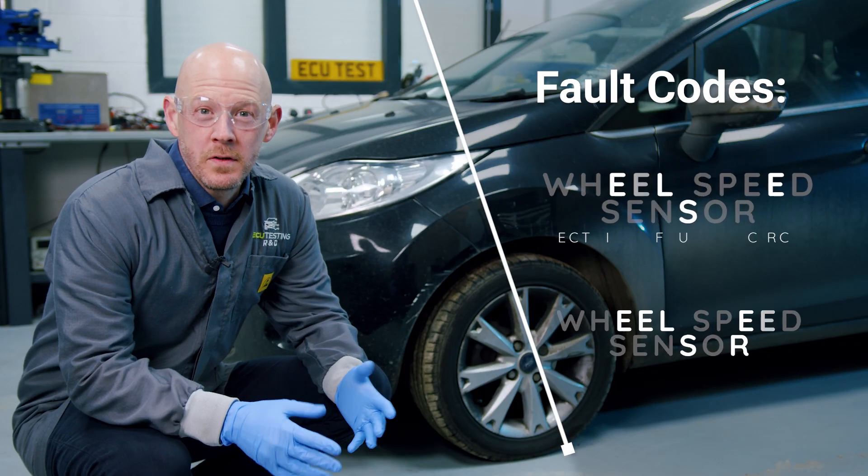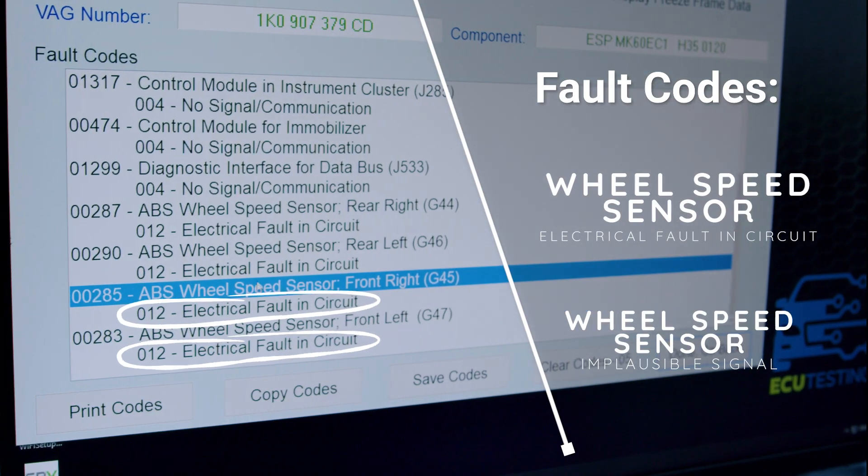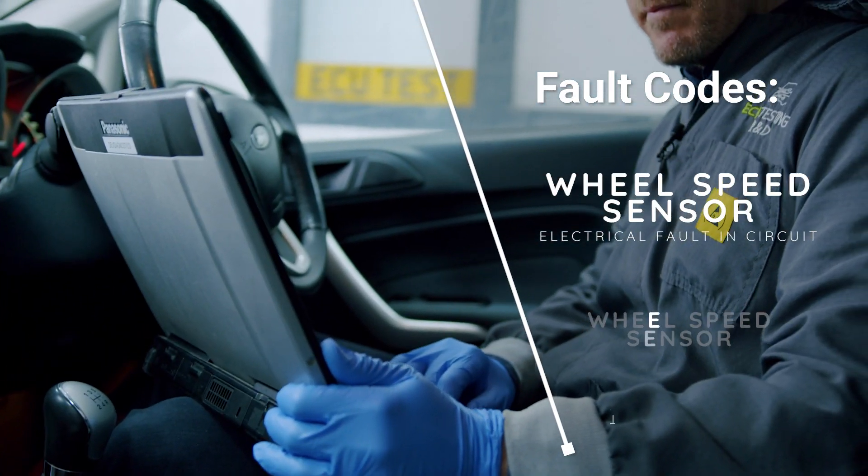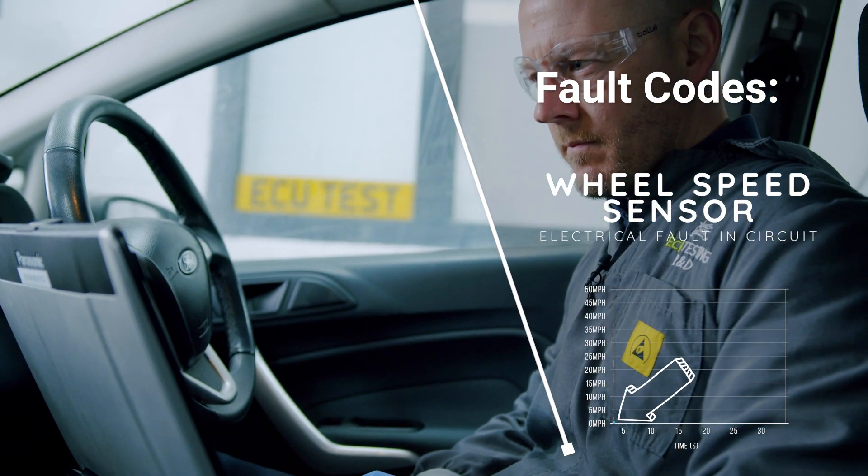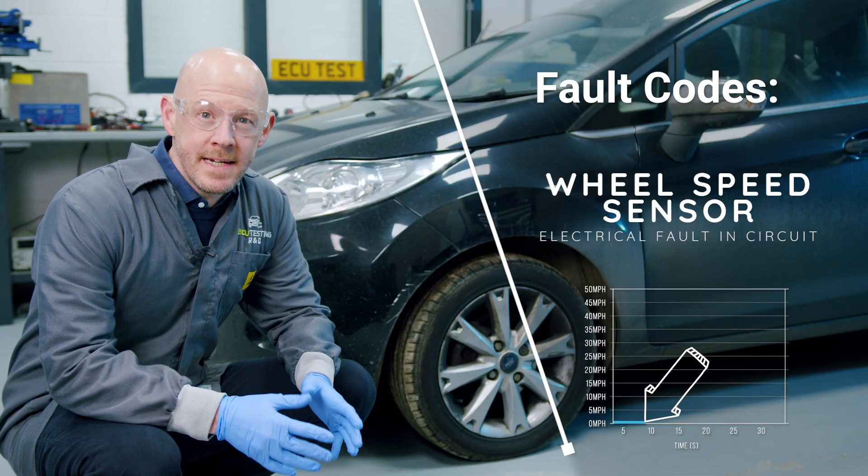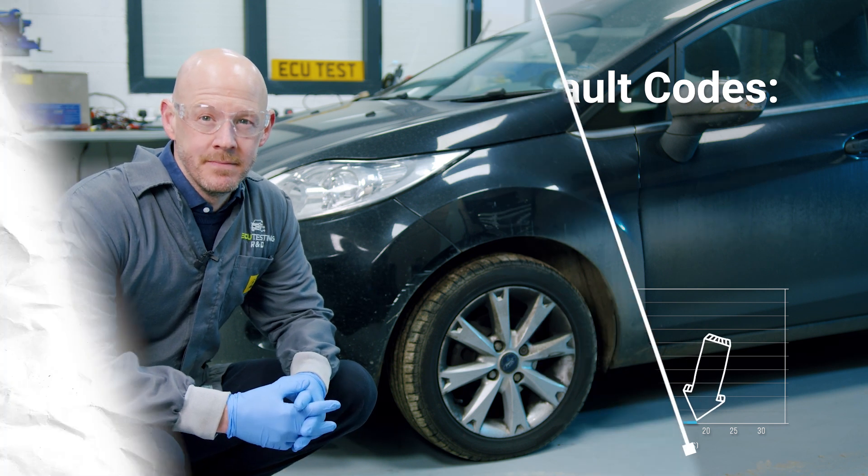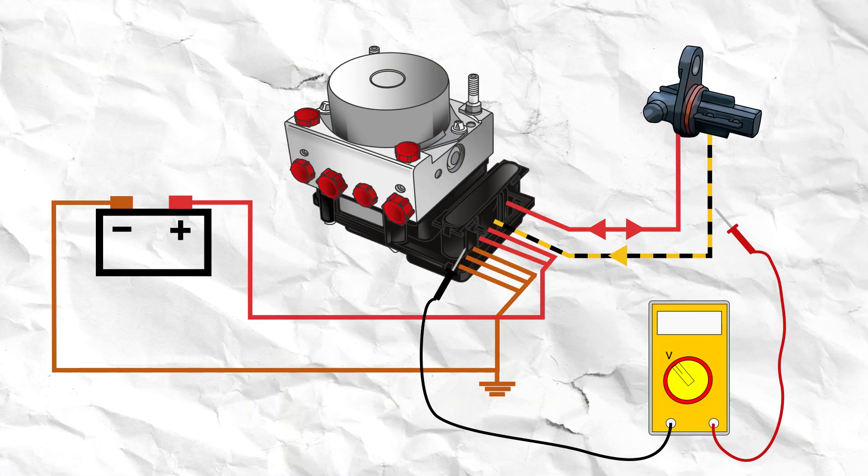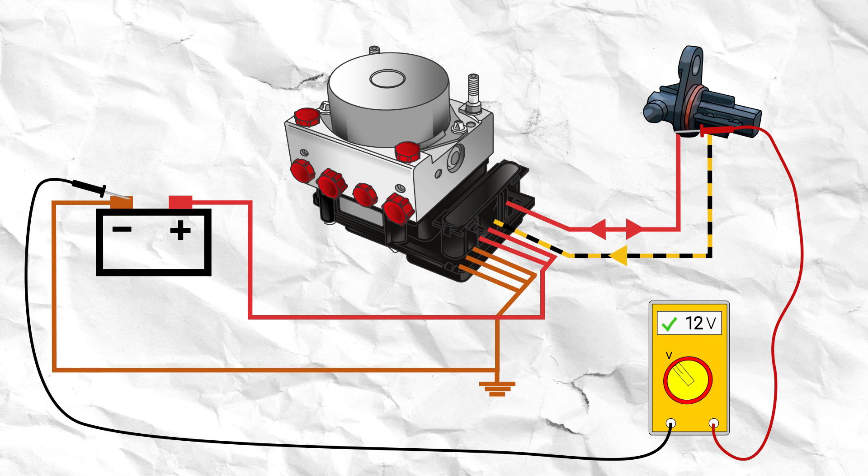The other common fault is, of course, wheel speed sensor no signal or circuit fault. If this is the case, then we would expect a circuit fault. We also wouldn't see a reading in the live data for that sensor. At this stage, we would locate the sensor and check that it is receiving a 12-volt signal and ground whilst the vehicle is not moving.